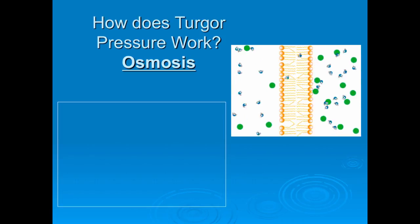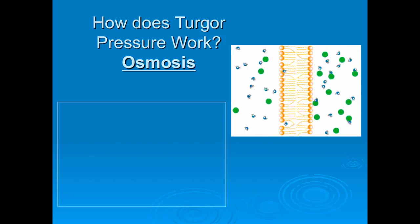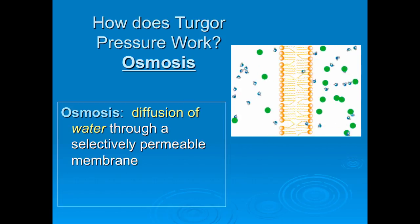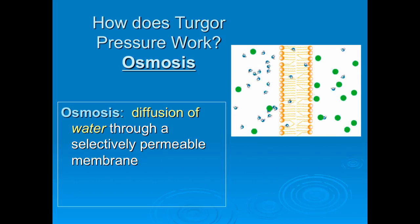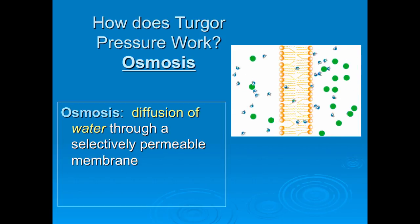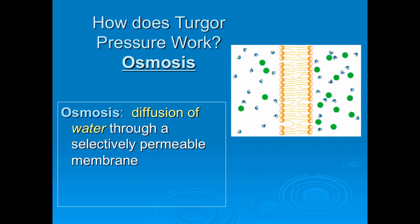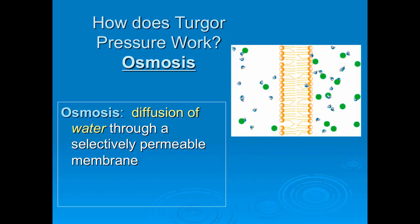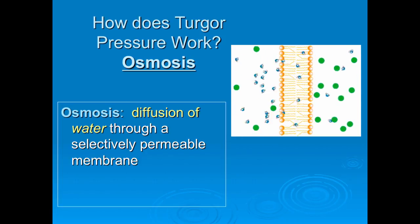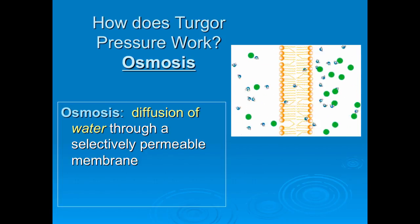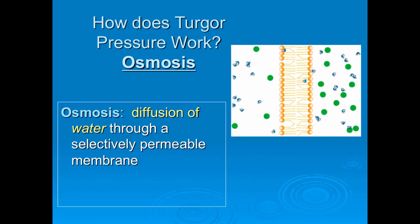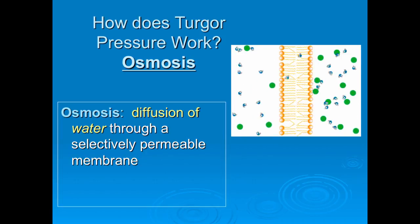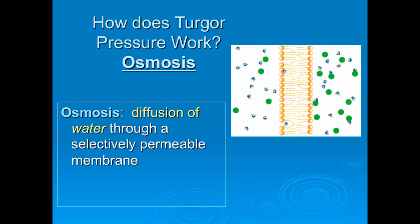How does turgor pressure work? Let's think of osmosis. The definition of osmosis is the diffusion of water through a semi-permeable membrane. After today's experiment — why did we do the gummy bear lab? It was to show osmosis.